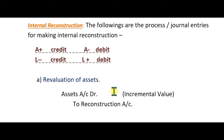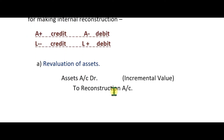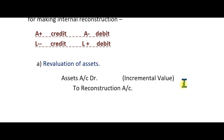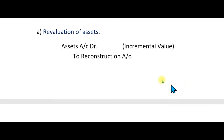If we revalue assets upward, for example assets were 50,000 and now 70,000, the entry is: Assets Account debit to Reconstruction Account for 20,000. If we decrease assets, the reverse entry is: Reconstruction Account debit to Assets Account.